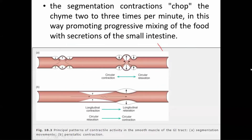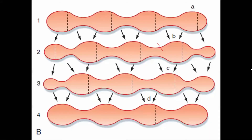The segmentation contraction chops the chyme two or three times per minute, and in this way it helps in progressive mixing of the food with the secretion of the small intestine.